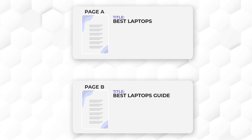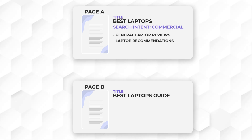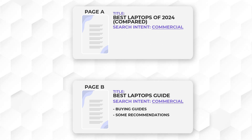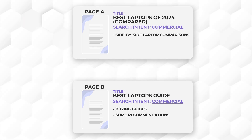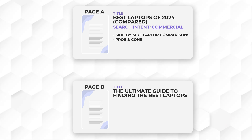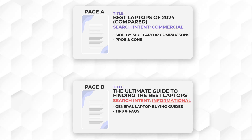The fifth solution involves changing the search intent of competing pages. For example, pages titled 'Best Laptops' and 'Best Laptops Guide' both have overlapping commercial intent. Optimize page A to 'Best Laptops of 2024 Compared,' focusing on side-by-side comparisons, pros and cons of each laptop — keeping the original commercial search intent. For page B, optimize it to be more informational, such as 'The Ultimate Guide to Finding the Best Laptops,' covering general buying guides for various users, tips and FAQs — transforming its search intent to informational.